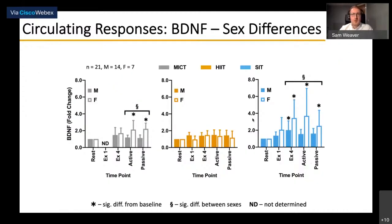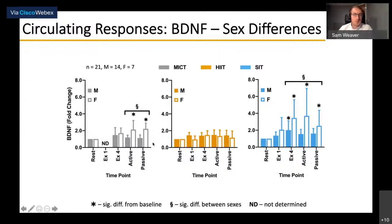BDNF alone, following AIC assessment, suggested that sex differences should be incorporated into models. When investigated, significant differences were found between male and female participants in both SIT and MICE conditions. In SIT, female participants showed a significant elevation in BDNF at the end of exercise maintained into active and passive recovery, whereas male participants showed a significantly smaller response — significant elevations only at the end of exercise. In the MICE condition, which showed no overall cohort response, female participants showed a significant elevation at passive recovery with no response in male participants, suggesting a potential sex difference requiring further investigation.